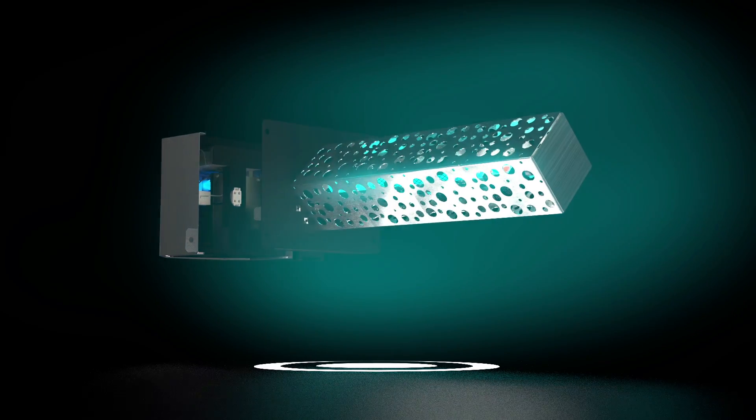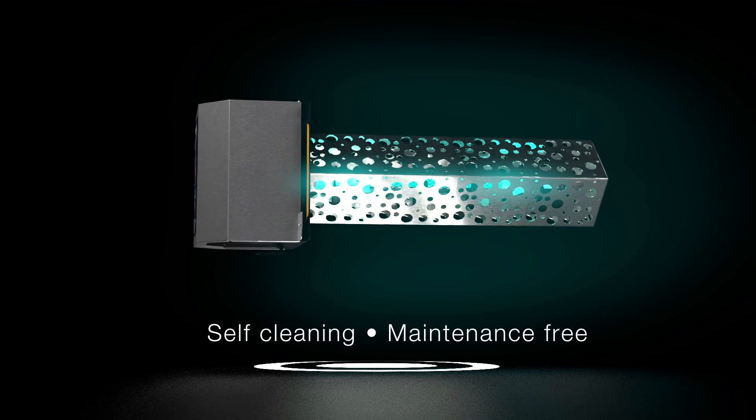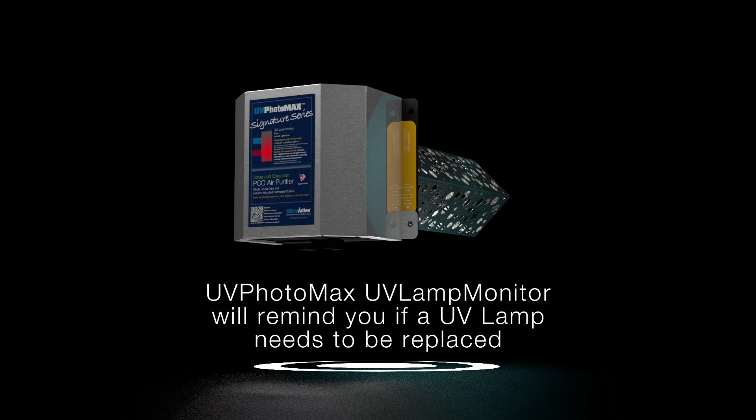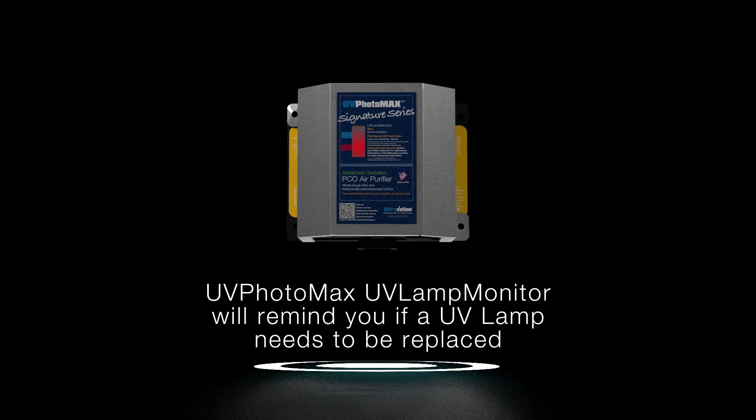The oxidation module is self-cleaning and virtually maintenance free, except for annual UV lamp changes. The UV lamp monitor assures top purification performance by reminding you when the UV lamp needs to be replaced. It will also inform you if a UV lamp goes out.